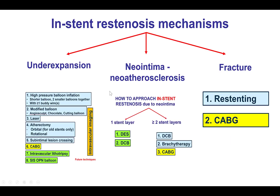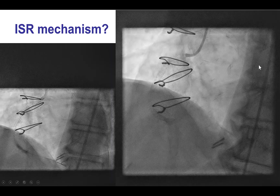There are three main categories of in-stent restenosis mechanisms. The first one is stent under-expansion. The second one is neointima or neoatherosclerosis formation. And the third one is stent fracture.